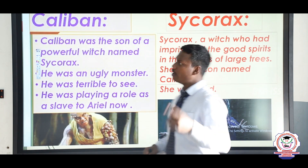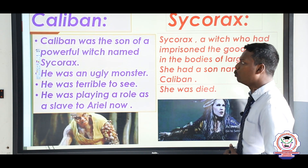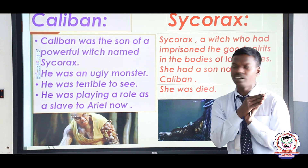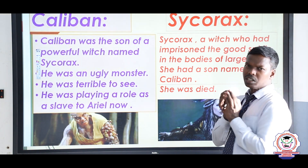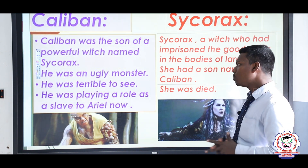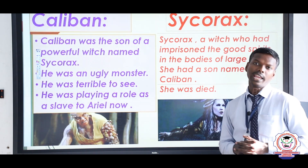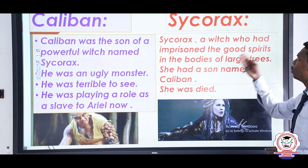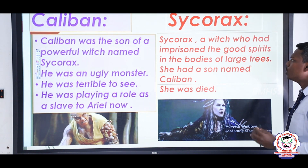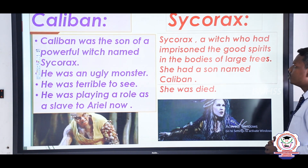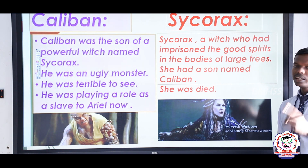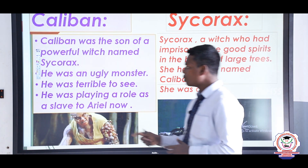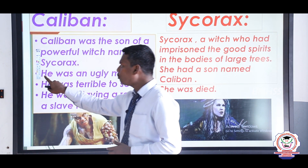Caliban was the son of the powerful witch named Sycorax. He was an ugly monster, terrible to look at. He played the role of a slave to Ariel. As for Sycorax, she was the witch who had imprisoned the good spirits in the bodies of large trees, and she had a son named Caliban. Sycorax had died even before the events of the main story.